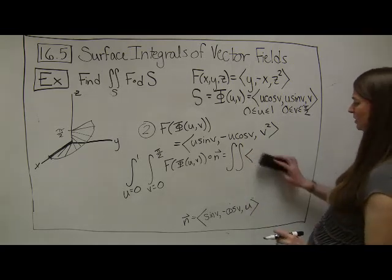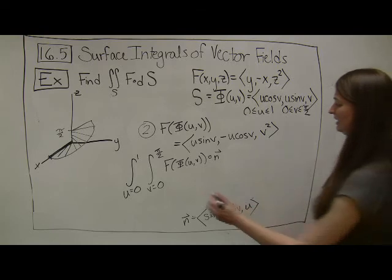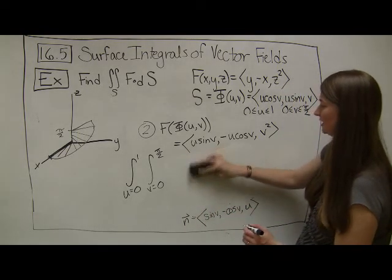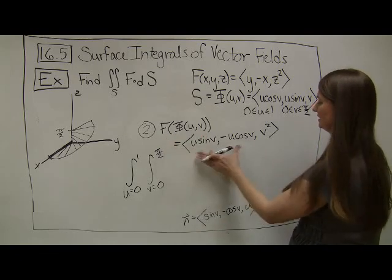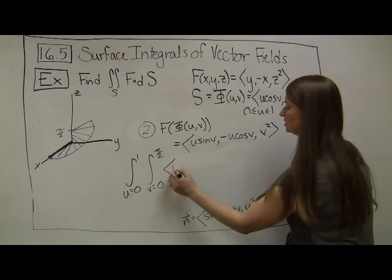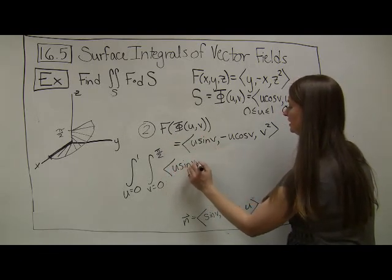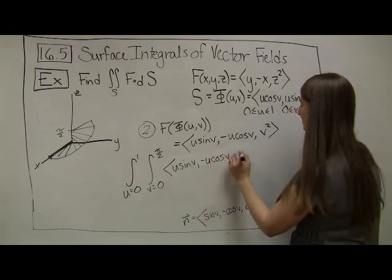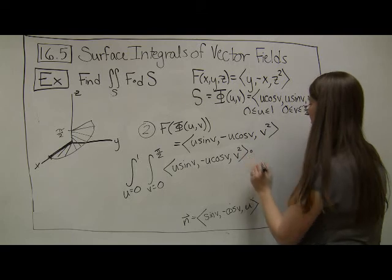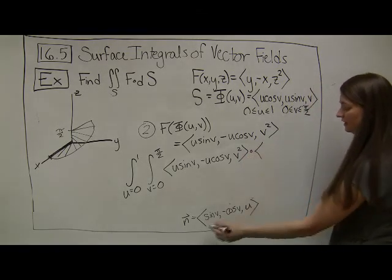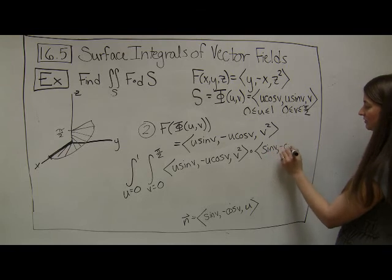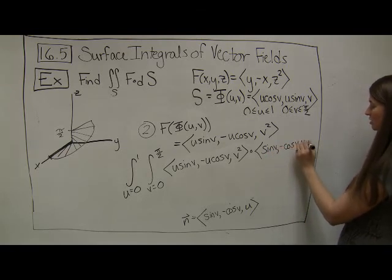It's going to be, I'll just erase this because we know this. F of φ of (u,v) is given by this vector, which is <u sin v, -u cos v, v²>. And I'm going to dot that with the normal vector, which we found down here: <sin v, -cos v, u>, dv du.